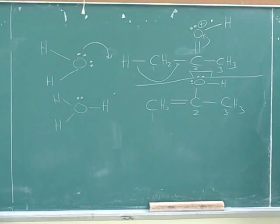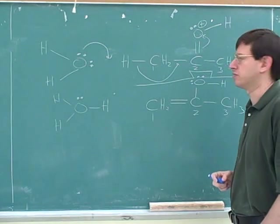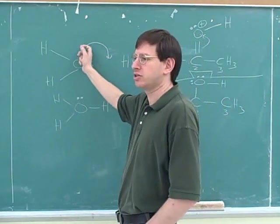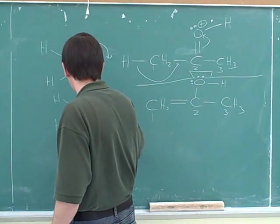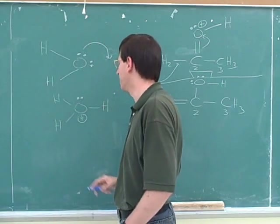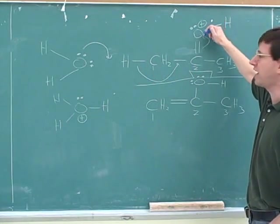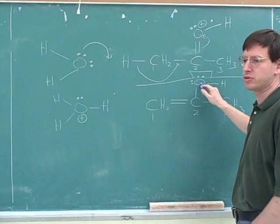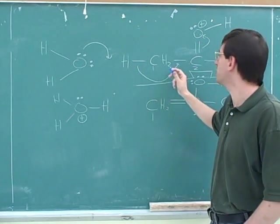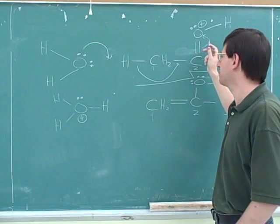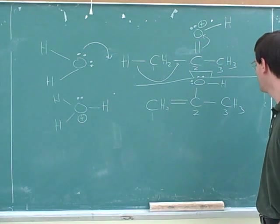So you got all the bonds right — that's good. You thought about the charges, which many students would not. Here's the atom at the initial tail: it started neutral and it lost electrons, so it will have a positive charge, but many students forget that. This started positive and it's gaining electrons, so it becomes neutral. There's no charges changing here because we're in the middle of the string of arrows. Here we have three arrows in a row, but it really shouldn't be that hard if we just take our time and go one atom at a time.